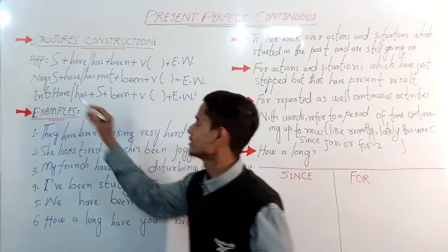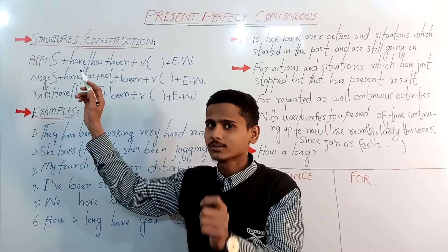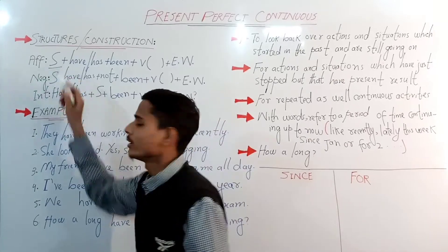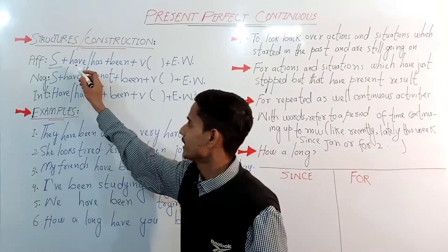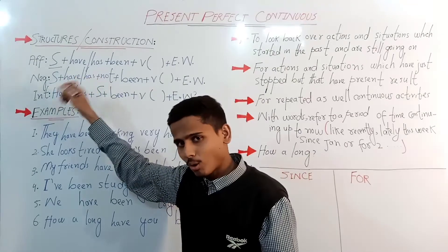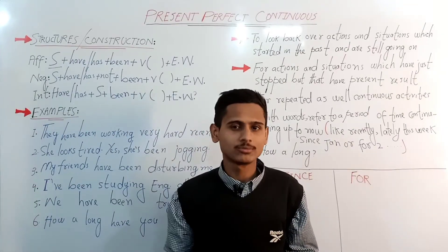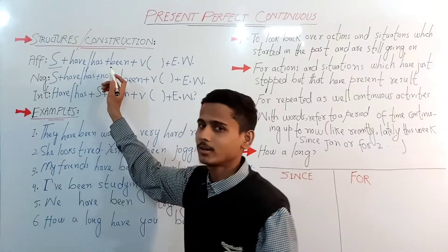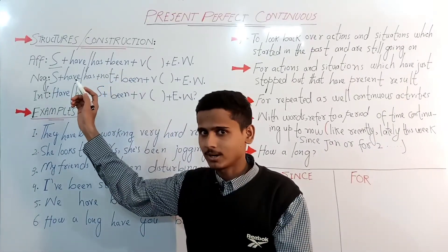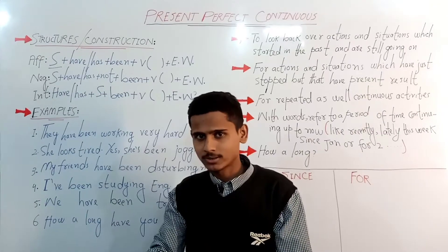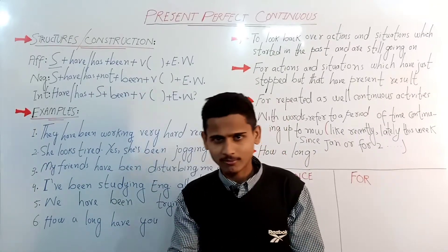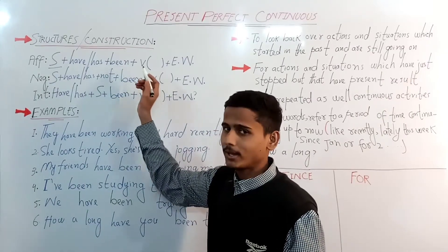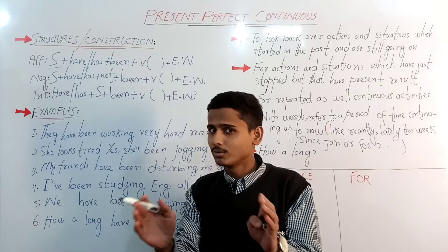Let's look at the structure. The first structure is affirmative. We always put the subject first, then we put have or has according to the nature of the subject — whether it's a pronoun or noun. Then we put 'been'. Keep in mind this tense is both continuous and perfect.